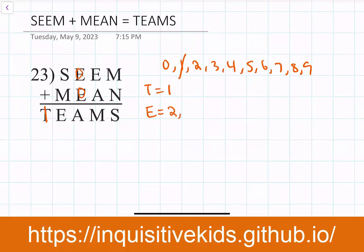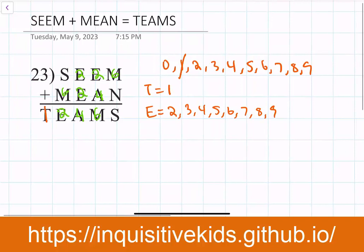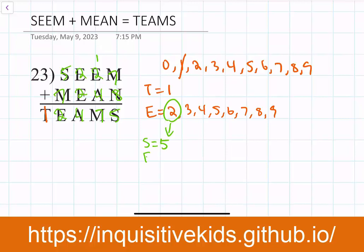So e can be any digit 2 through 9. What if e equals 2? Then a would be 4 and m would be 6. This wouldn't work out because we wouldn't know what s could be — s can't be 6 because m is already 6. What if e equals 2 again, but this time a equals 4 and m is 7 because we carried a 1? Then s would be 5, and the only value left for n is 8. Let's write that down: e equals 2, s equals 5, m equals 7, a equals 4, n equals 8.